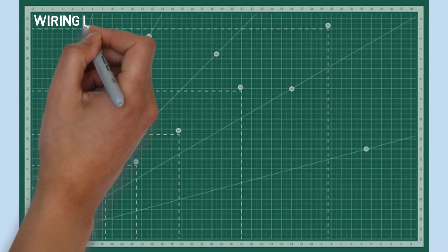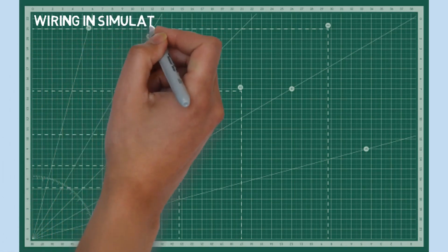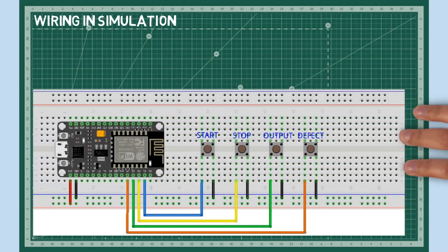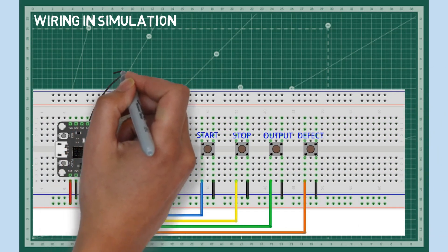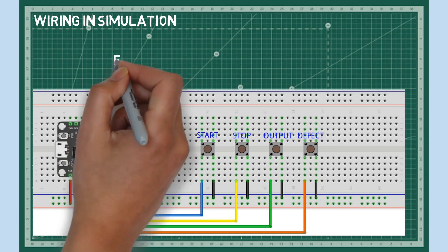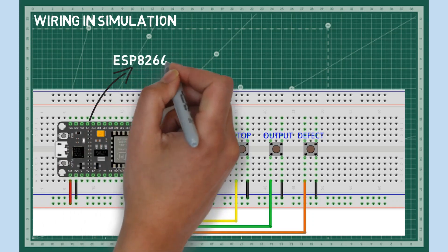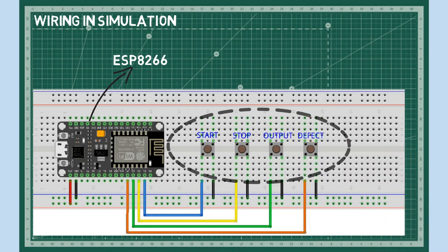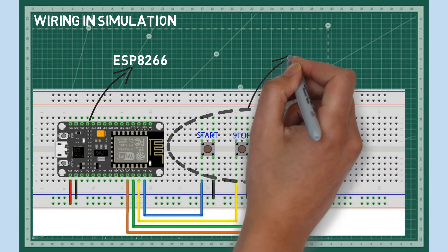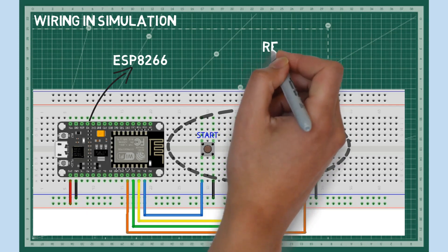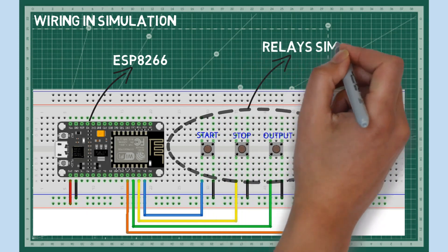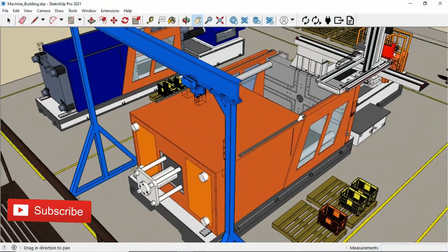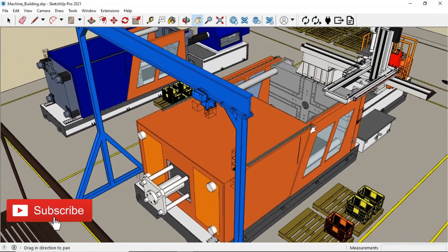This is the wiring of the ESP device. As the IoT device, we use an ESP8266. As relay simulation, we use buttons, which will be used as start, stop or trouble, output, and defect signals. The factory and machine models are created using the SketchUp application.